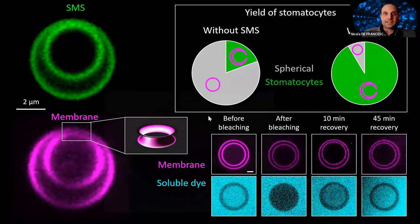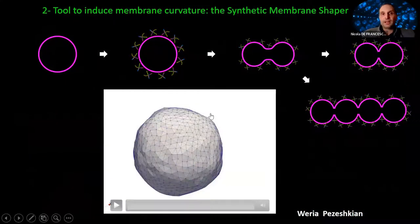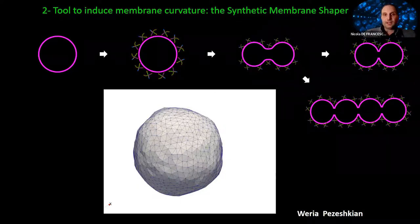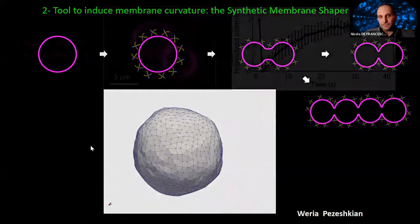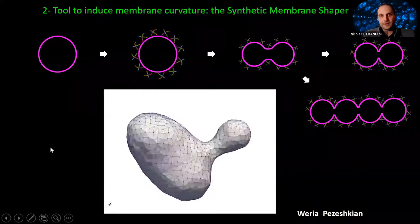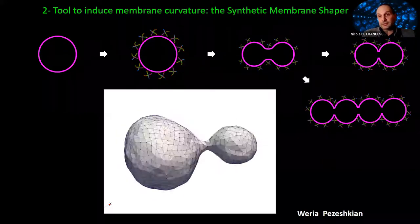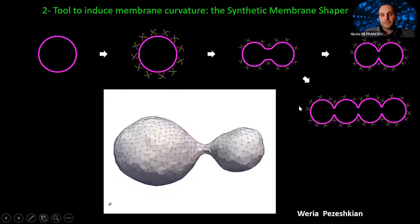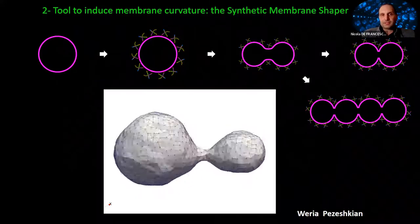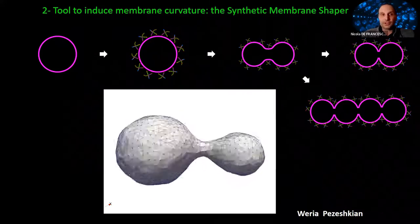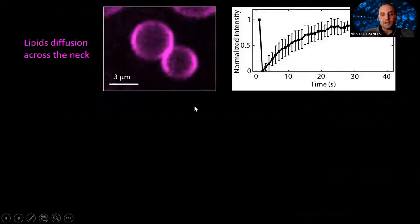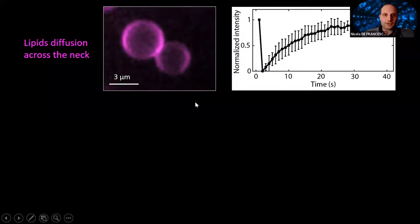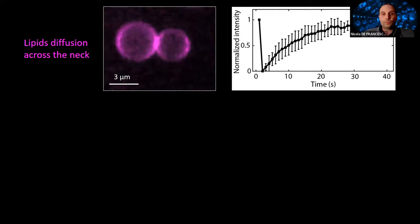Conversely, if we bind the SMS outside the liposome, the membrane bends outward, resulting in the production of dumbbells. Note that the same process can often result in a chain of dumbbells rather than a simple dumbbell. Imaging complex membrane shapes requires awareness of potential artifacts — for instance, a dumbbell could just be two liposomes adhering to each other. To confirm it's a true dumbbell, we bleach the fluorescent lipids on one lobe and measure the recovery. If there is fluorescence recovery, as in this case, we can be sure it is a true dumbbell.